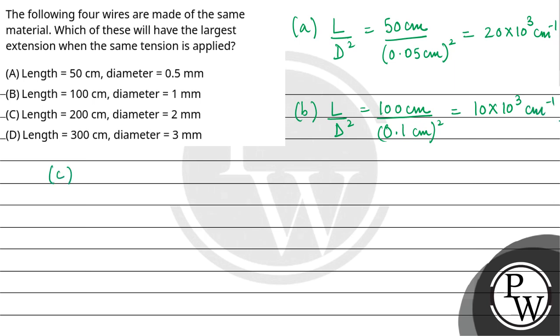Ab third wire ke liye, aapke paas L by d square hai, length hai aapke paas 200 cm and diameter aapke paas 2 mm hai, so it will be 0.2 cm square. So ye aapke paas 5 into 10 raised to the power 3 cm inverse.